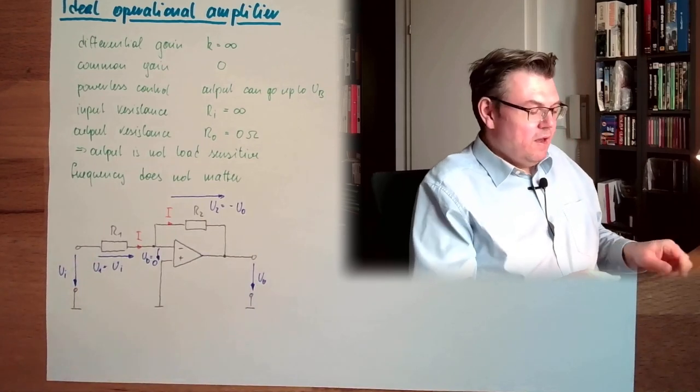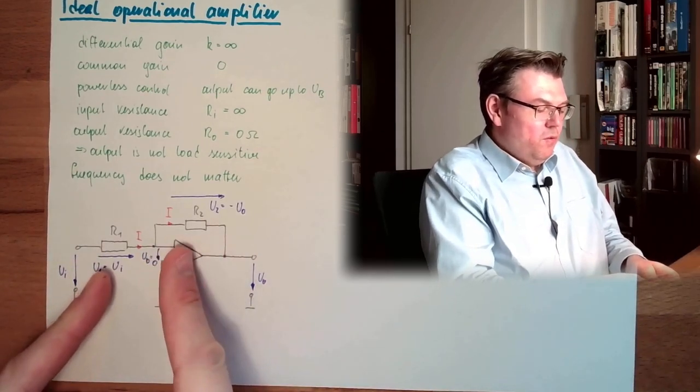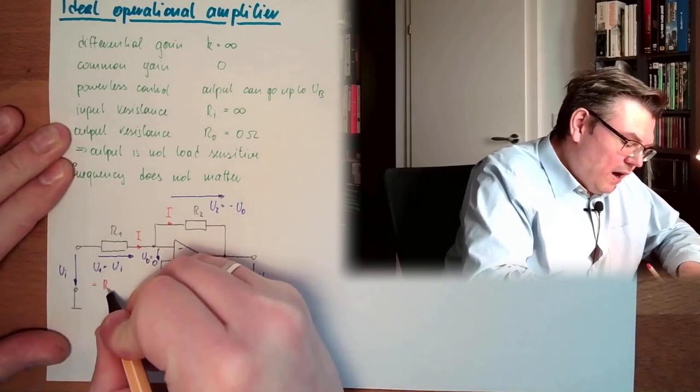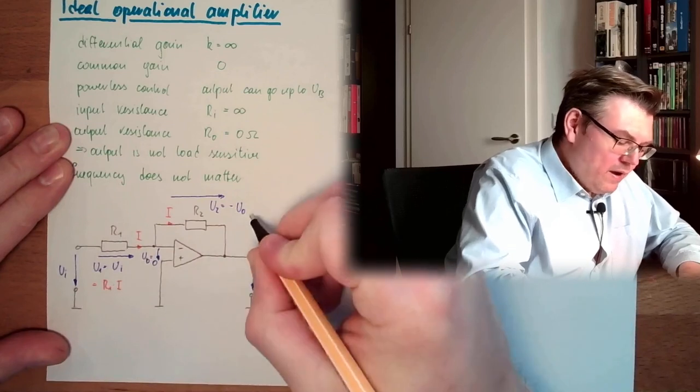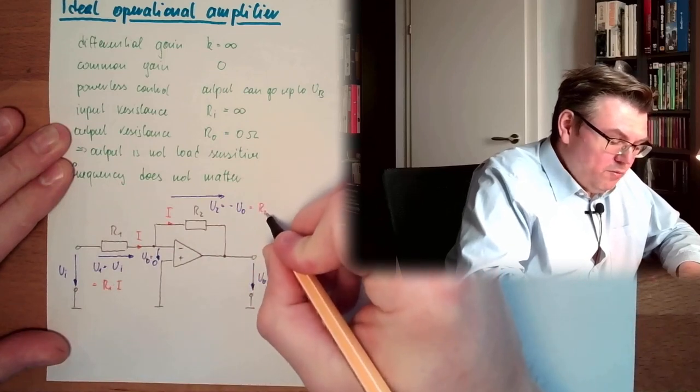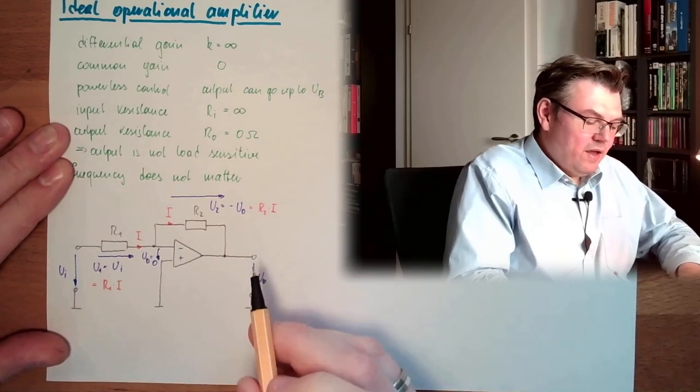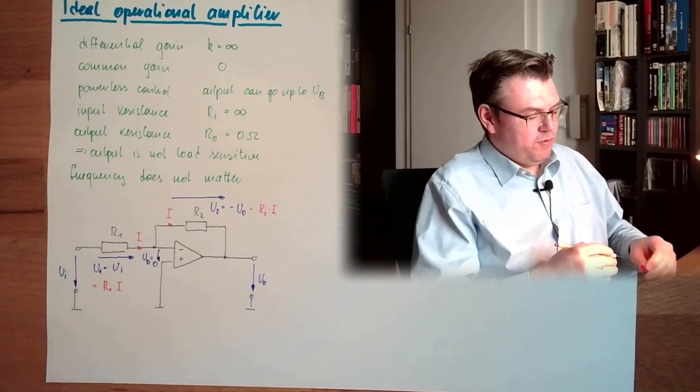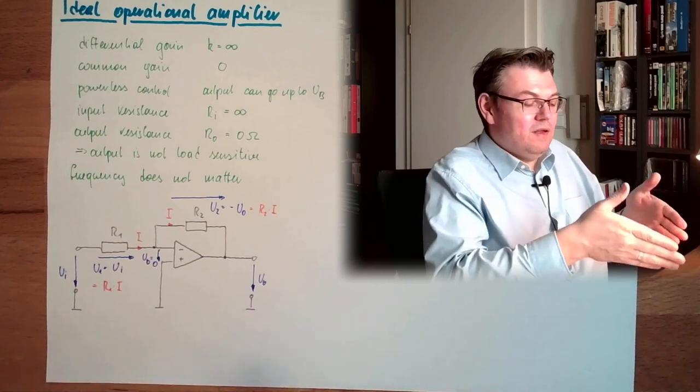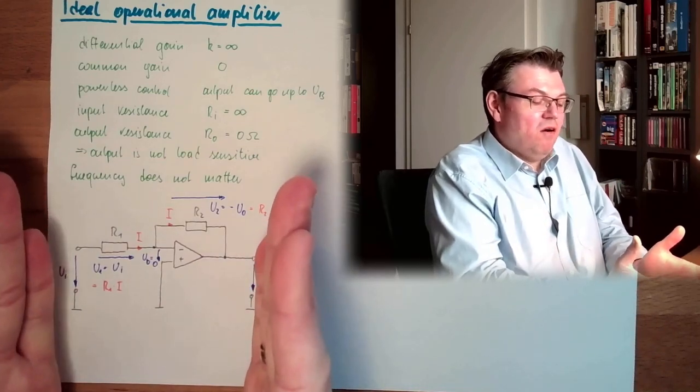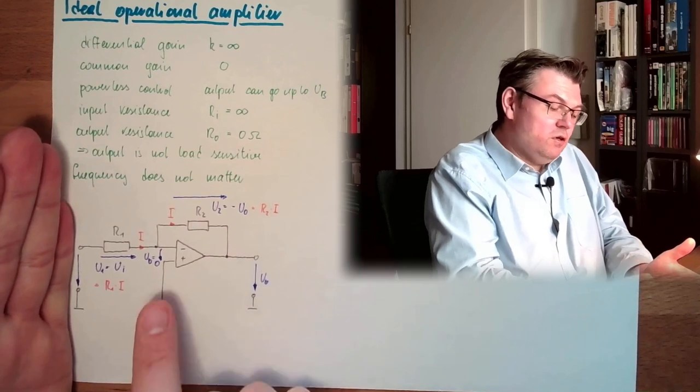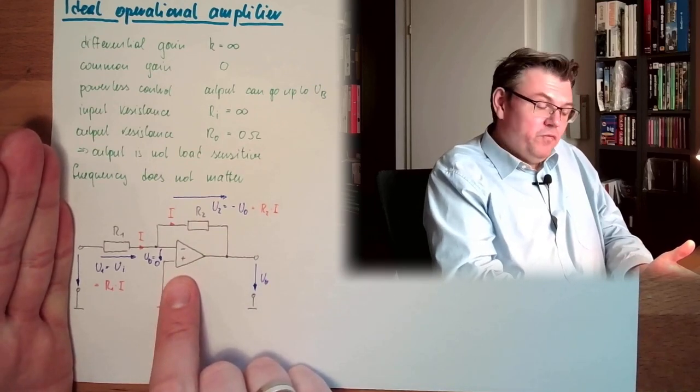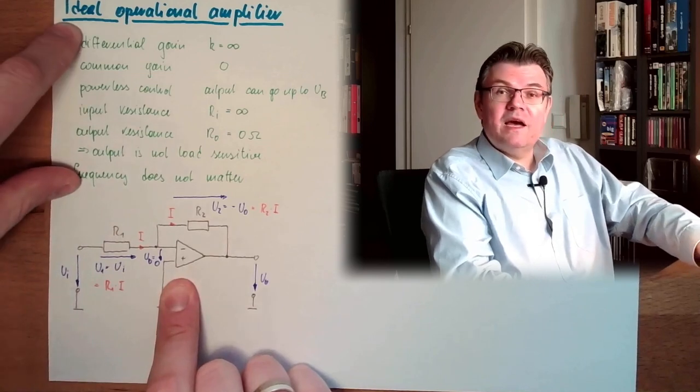And here we have U2 equals minus U output. And with this, these equals R1 multiplied by i, and these equals R2 multiplied by i. And then I realize it's just about the ratio of the two resistors. This will make my gain factor of my whole application, not just the operational amplifier. The operational amplifier, we assumed it's ideal.